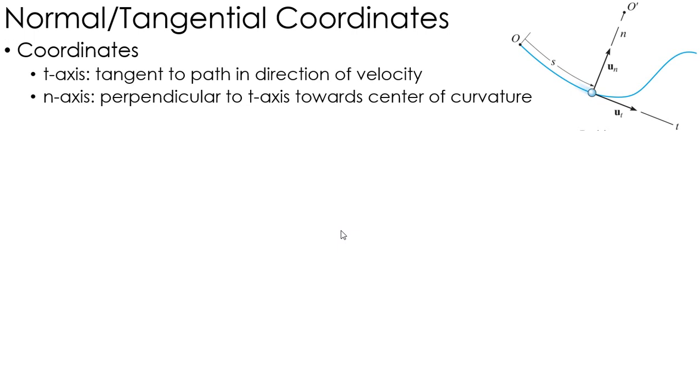We are now going to move from rectangular coordinates to coordinates that we call normal and tangential coordinates, or my n and my t axis.